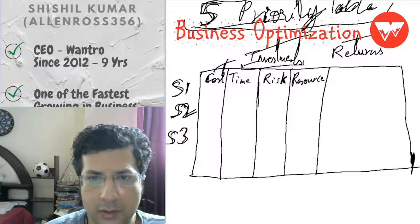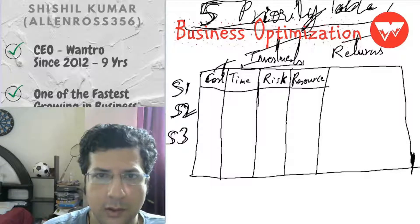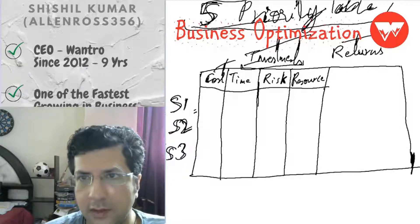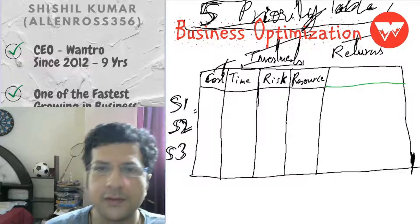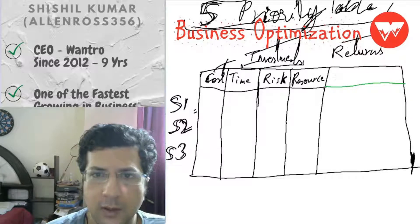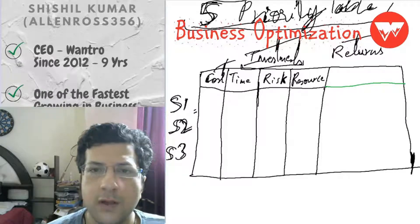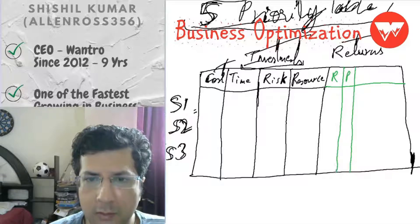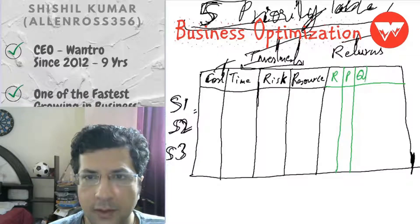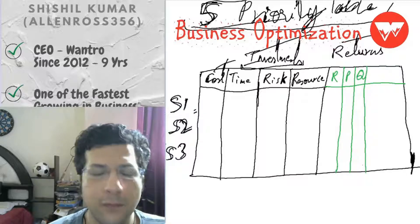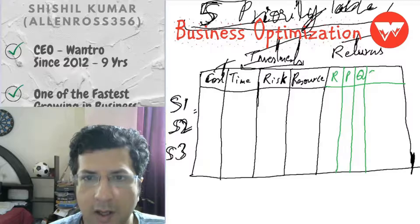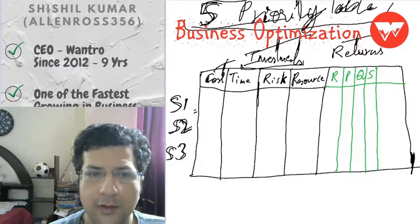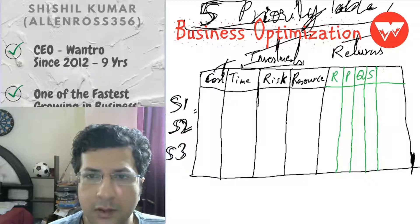There can be multiple types of investments depending on other types of resources it's going to consume. Now what type of returns are there? Returns can also be of multiple types. Returns can be: how much revenue will be increased, how much the profits will increase, what will be the enhancement in quality — quality of execution, quality of the product — the future speed by how much the speed of progress towards the goal is going to increase, and how much will be the future cost reduction.